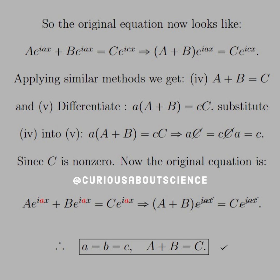So the original equation now looks like, if we plug this in, Ae^(iax) + Be^(iax) = Ce^(icx), and now we can factor out that exponential, and we're left with (A + B)e^(iax) = Ce^(icx).